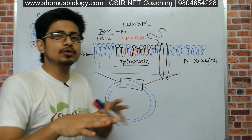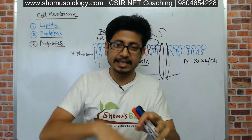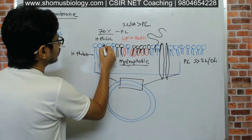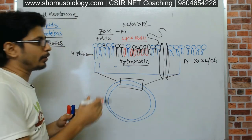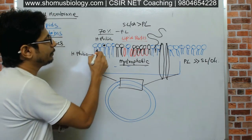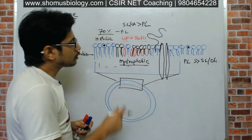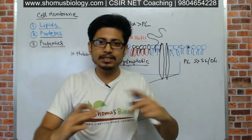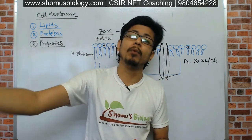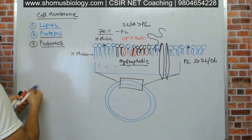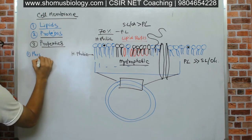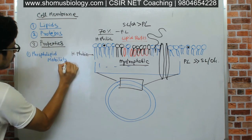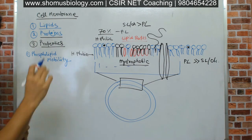The phospholipids and other lipids in the cell membrane need to be mobile — they are dynamic in nature. So if I mark a phospholipid here with a fluorescent tag and check where it is after a few minutes, we will see that this phospholipid has moved to another location. This is known as membrane fluidity or phospholipid mobility, and it is one of the key properties of the cell membrane.